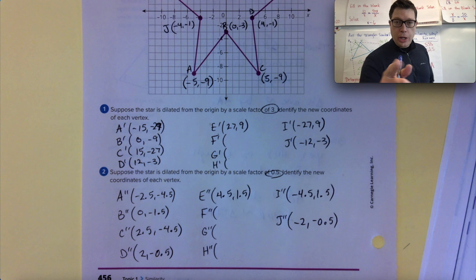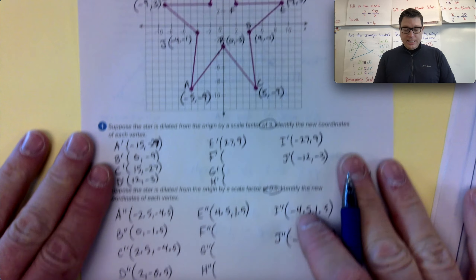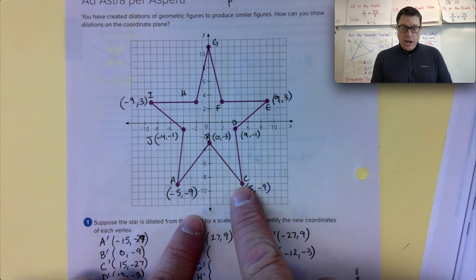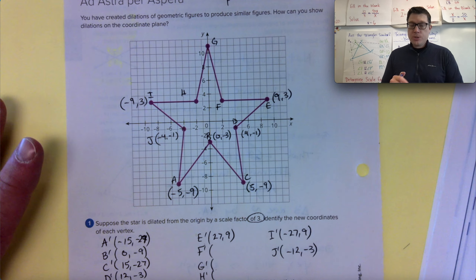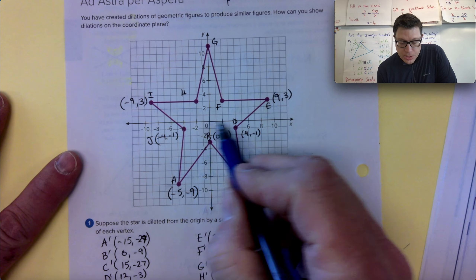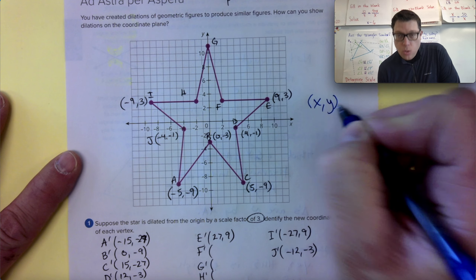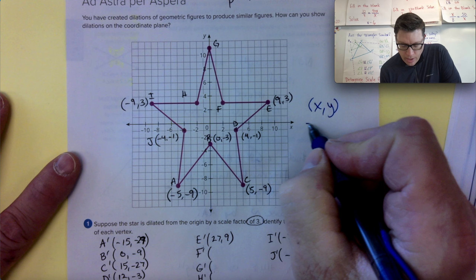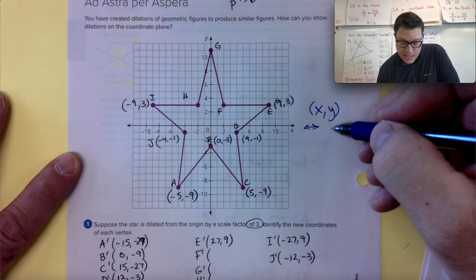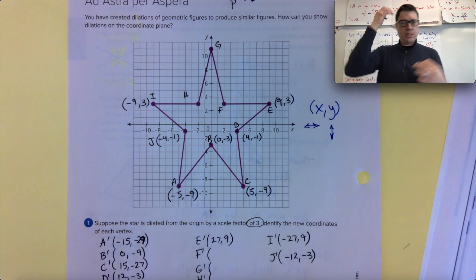I'm assuming you're back, so let's go. I identified on the star shape where every corner was. One thing you need to know is that the first number in a coordinate is the X coordinate, and that's side to side — right and left. The second number is up and down, and that's consistent.